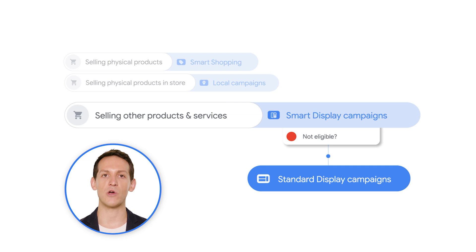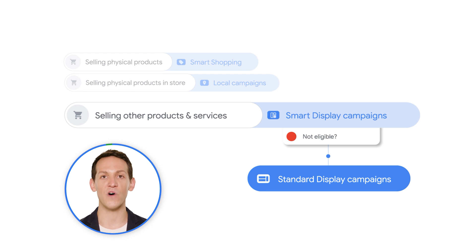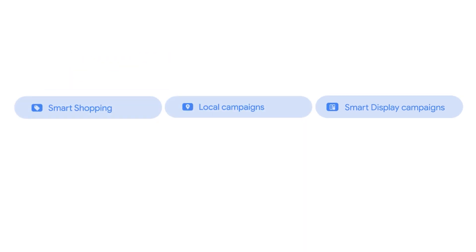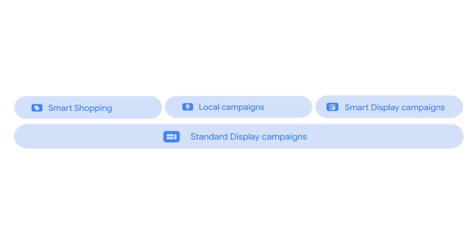Standard Display is an effective strategy for new or small accounts with either no conversion history or small conversion volume. You can also run Smart Shopping, local campaigns, or Smart Display alongside Standard Display campaigns. This will allow you to run targeted promotions, while Smart Campaigns will continuously find new customers. To drive your performance goals, these Standard Display campaigns should be powered by automation.